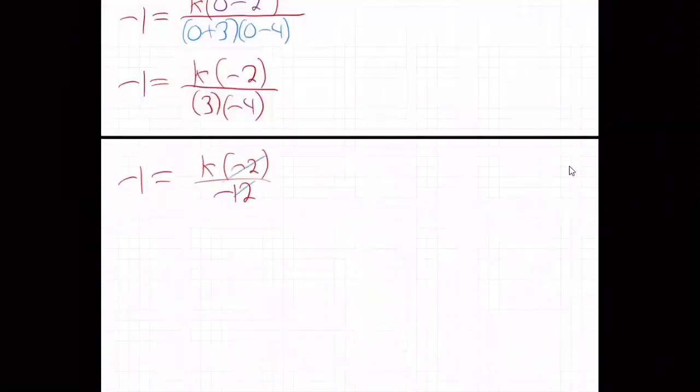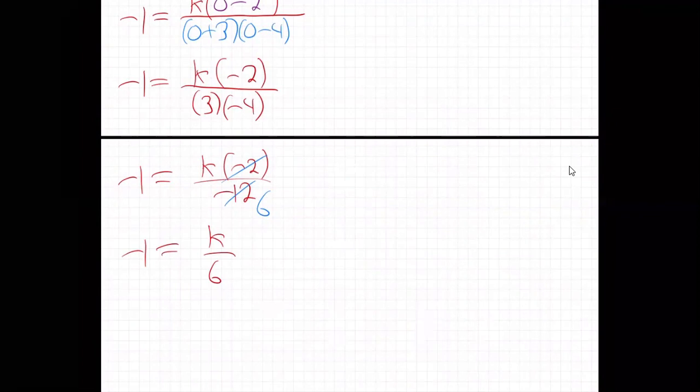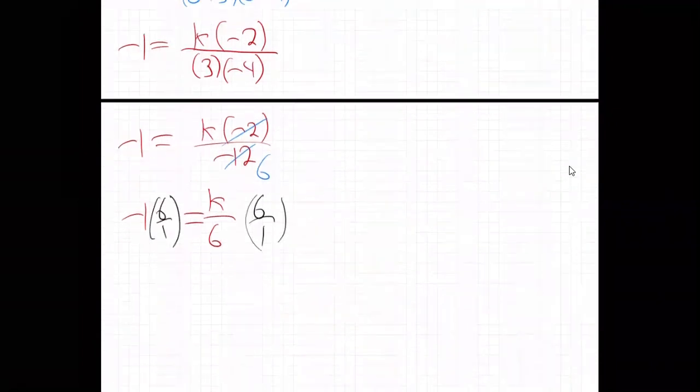You can reduce that because when there's six times the two negatives cancel. So we get negative one is k over six. That six is on the bottom because the bigger 12 was on the bottom. And now just multiply both sides by six over one. So multiply both sides by six over one. These cancel. k is alone. Minus six. So k must be minus six.